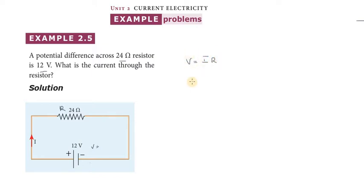We have I equals V by R. So I equals V, which is 12, divided by R, which is 24. So 12 by 24 equals 1 by 2.